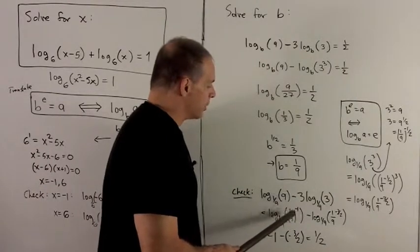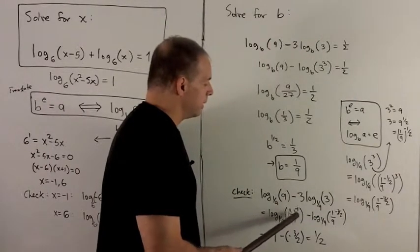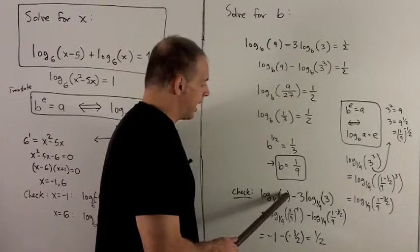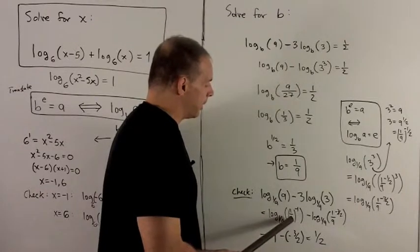So 9, I can rewrite as 1/9 to the minus 1, because if I have 9 pushing it to the bottom, I have to pick up a minus sign.